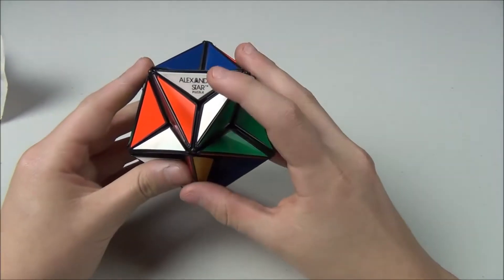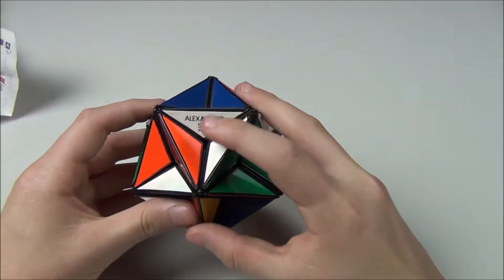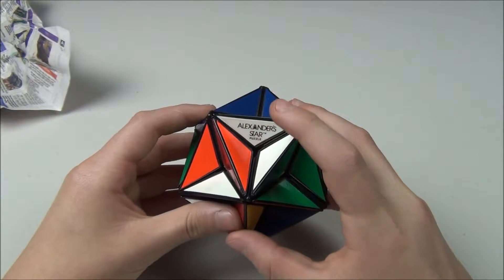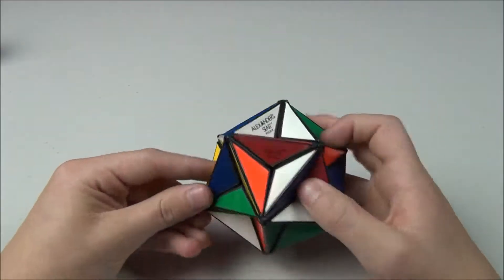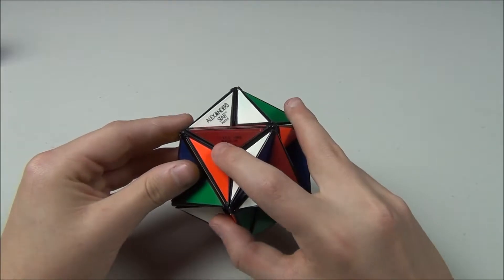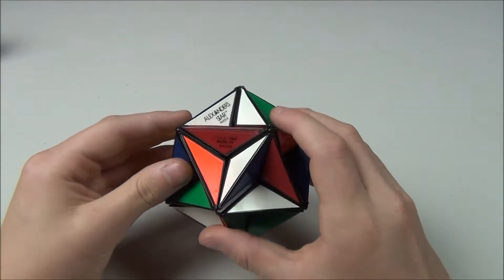Now, if we look over here, it has the wonderfully 80s Alexander's Star logo, and just that glorious retro typeface that makes it so awesome. And as you see here, ITC, Ideal Toy Company, 1982, Made in China.